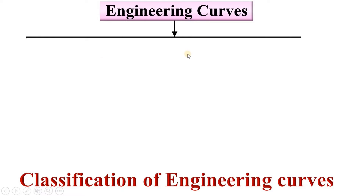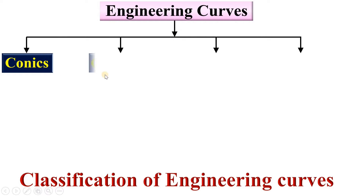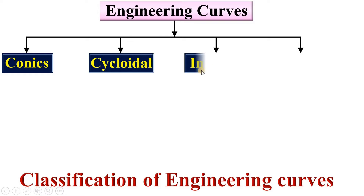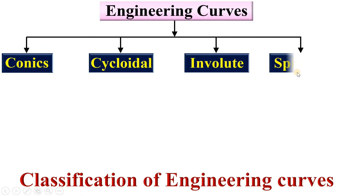Generally, engineering curves are divided into four different groups: conics, cycloidal, involute, and spiral. Now let us see them one by one.